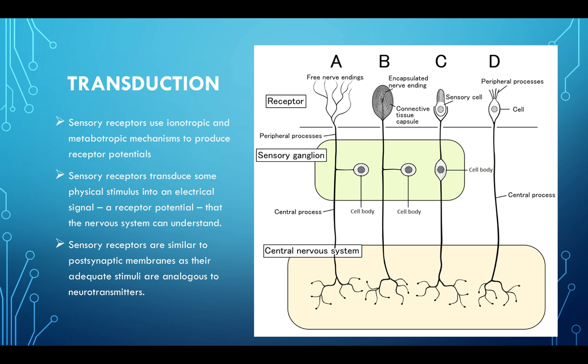Transduction: sensory receptors use ionotropic and metabotropic mechanisms to produce receptor potentials. Sensory receptors transduce some physical stimulation into an electrical signal — a receptor potential that the nervous system can understand. You're having a neurochemical consequence and also a neuromechanical consequence to create some sort of CNS change. All you really need to know is that transduction takes whatever is being provided as stimulation and encodes it so the brain can be aware of it.